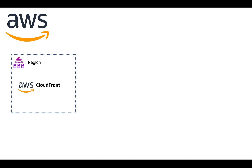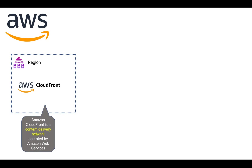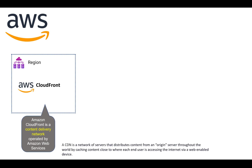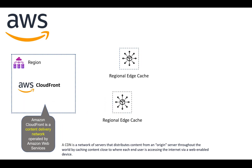Moving on to edge locations, you should first know about AWS CloudFront. CloudFront is a content delivery network, or CDN, operated by Amazon Web Services. This CDN is a network of servers that helps distribute content from the original servers throughout the world by caching content close to where each user is accessing the internet. You may have heard of CDNs — they help people stream video content or browse websites easily even when web servers are in a different country.